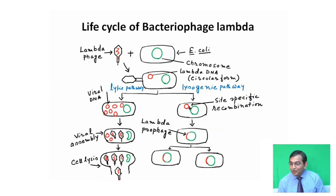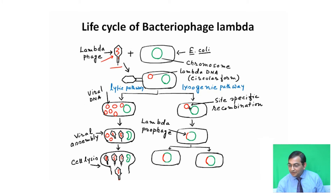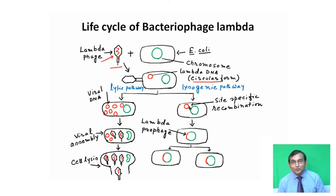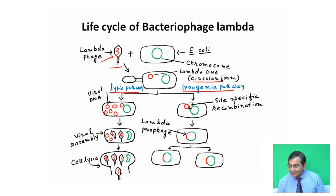Life cycle of bacteriophage lambda. The lambda phage enters the host cell and injects its DNA. The DNA is normally linear in lambda phages, but when the lambda phage enters inside the host cell, it becomes circular form. After entering into the host cell, it follows either the lysogenic pathway or the lytic pathway.